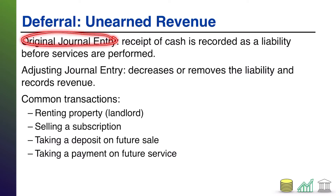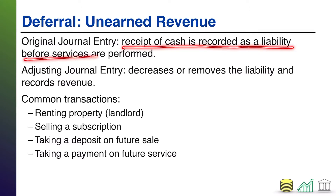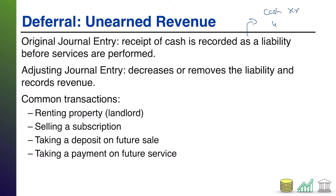In the original journal entry of an unearned revenue, you receive cash, but you record it as a liability because services haven't been performed yet. It looks like debit cash — because somebody paid you ahead of time — and credit unearned revenue, which is a liability. You owe someone a service that will come later.